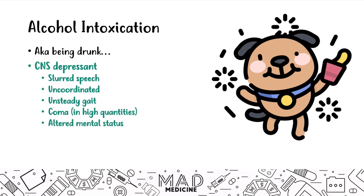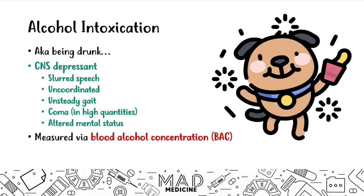All of this seems straightforward, except when it's presented on USMLE Step 1 vignettes it can be a little confusing because you may misinterpret it for another drug. Alcohol is measured in the blood via blood alcohol concentration or BAC. A BAC of 0.08 or 8% means you are legally drunk, and anything greater means you cannot drive.